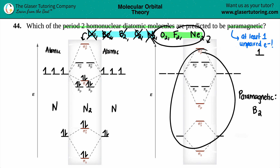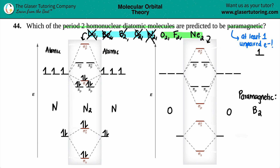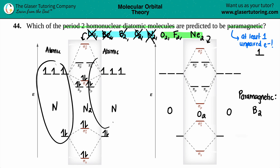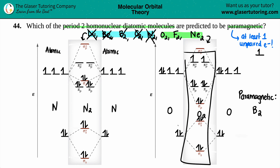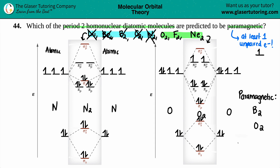Now we move to the second orbital diagram for groups six through eight. Starting with oxygen: oxygen has one more valence electron than nitrogen, giving six. So each O contributes six, and six plus six is twelve electrons total. Filling from the bottom: one through ten are placed, then eleven and twelve go into the degenerate antibonding orbitals. By Hund's rule, those two electrons sit in separate orbitals — unpaired. So O₂ is paramagnetic.